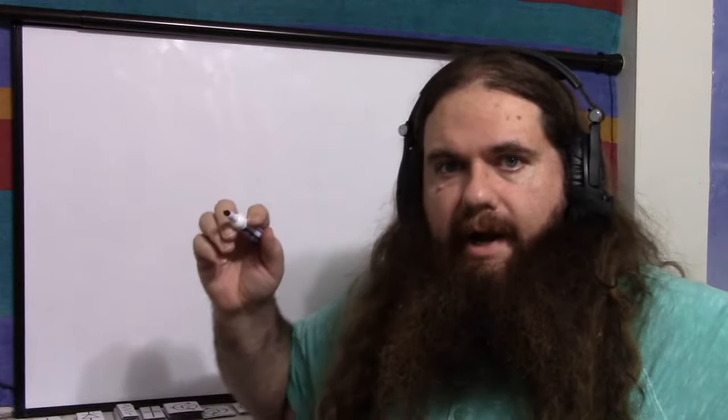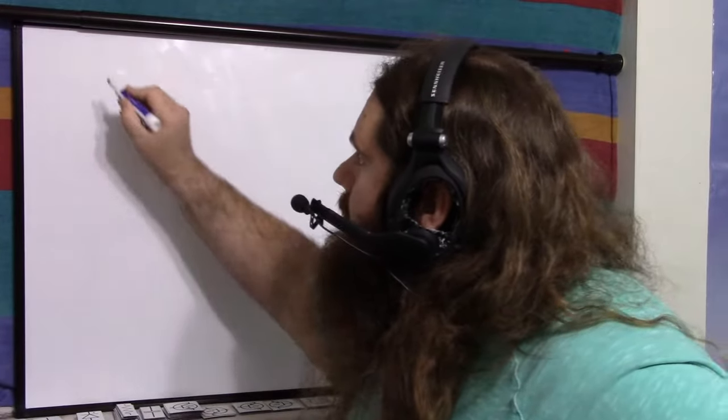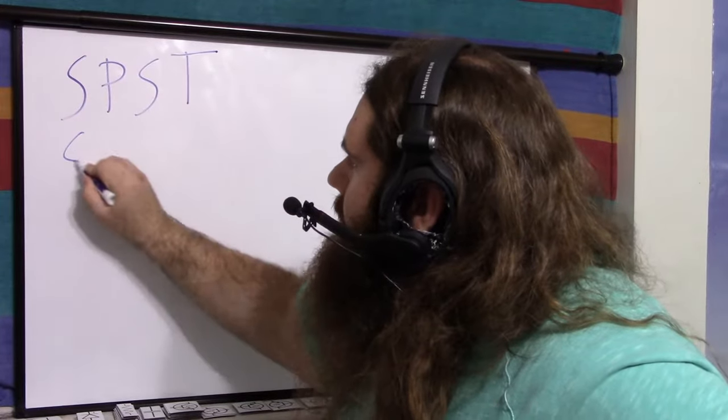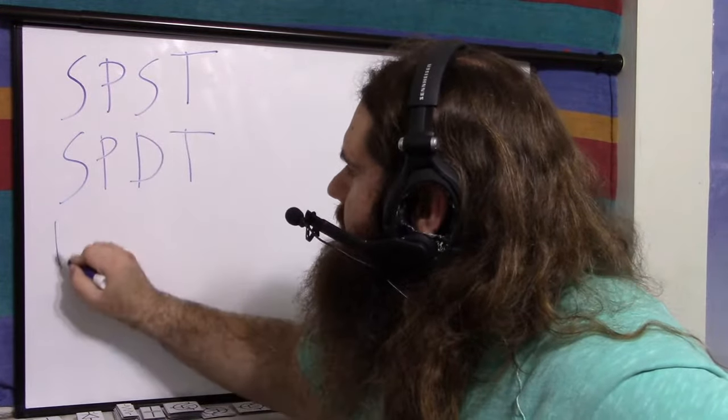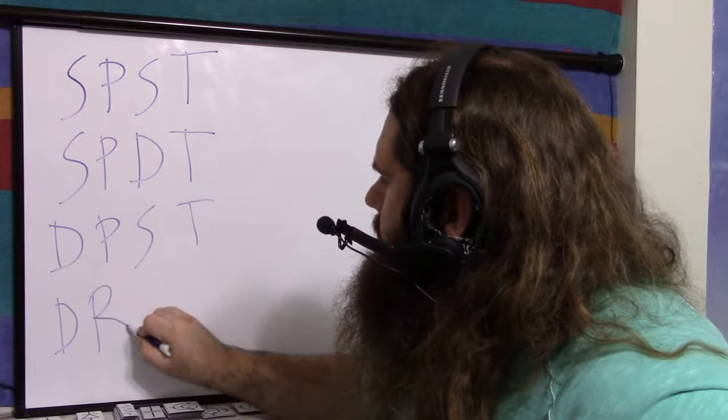Switches, as in physical switches, come in a hundred million different varieties. Momentary switches are also known as buttons, but we're talking about the ones that you put in a position and keep them there. The four varieties that almost all switches you ever deal with will come in are SPST, SPDT, DPST, and DPDT.